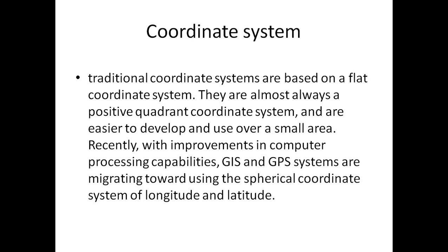Traditional coordinate systems are based on a flat coordinate system. They are almost always a positive quadrant coordinate system and they are easier to develop and use over a small area. Recently, with improvements in computer processing capabilities, GIS and GPS systems are migrating to using the spherical coordinate system of longitude and latitude. Generally, we represent something in a spatial domain or quadrant system to identify that object.